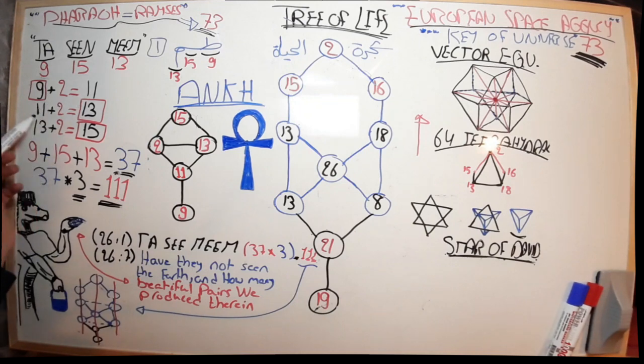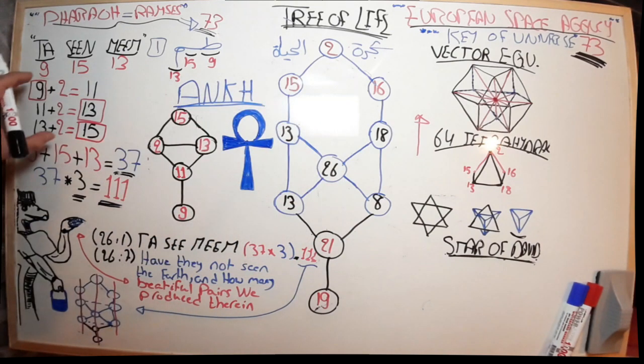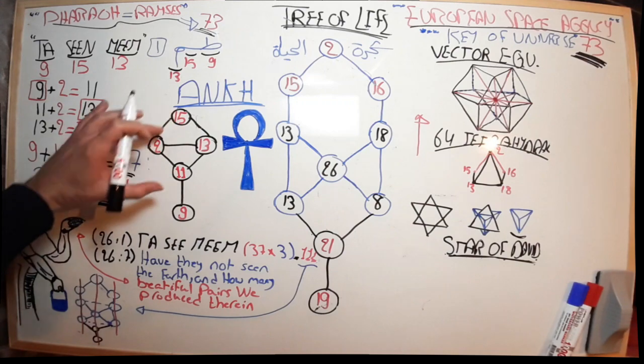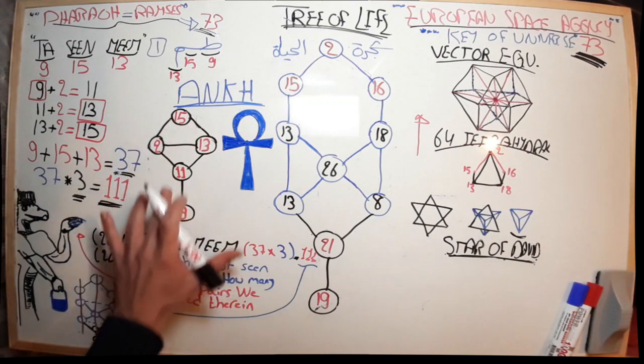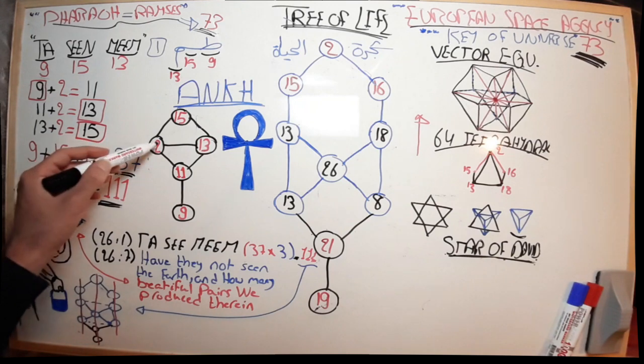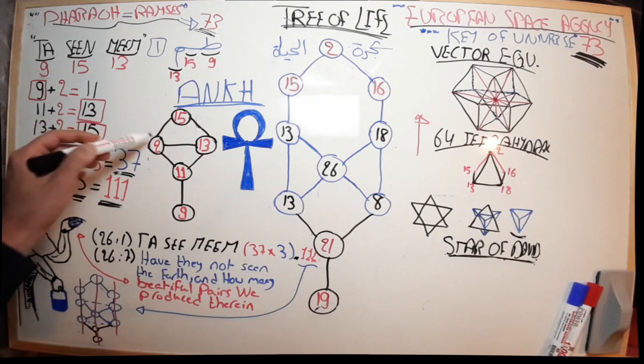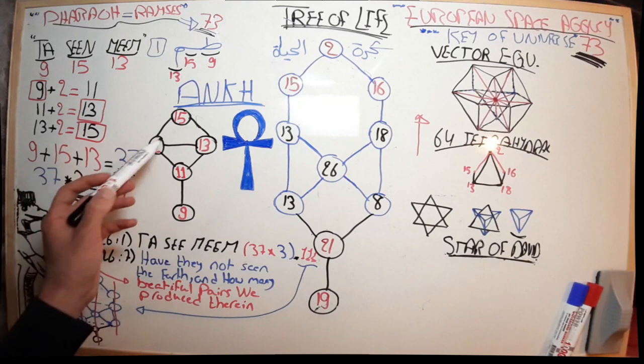So we start with 9. We already have 9. We add 2, we get 11. 11 times 11, we take the product, and here we add plus 2, we get the second number. Then we add 2, we got 15. So what we did, as for the Tree of Life, we take this equation and represent them in a symbol.